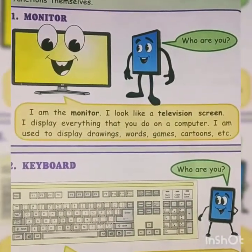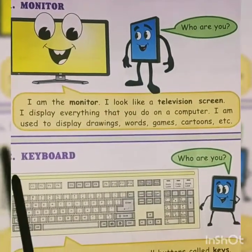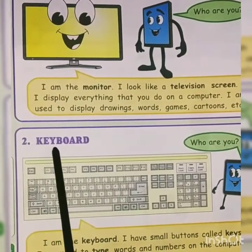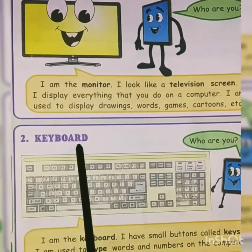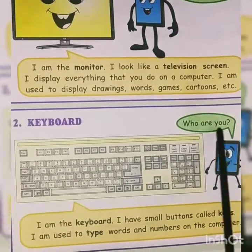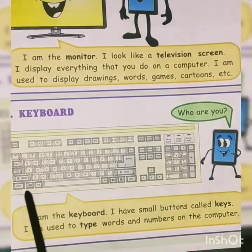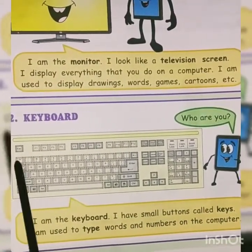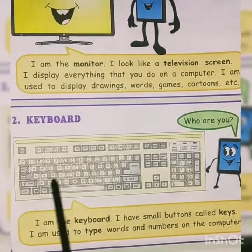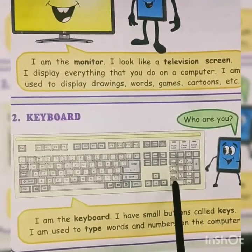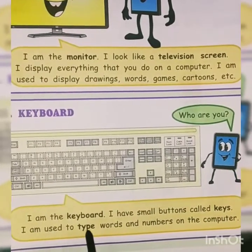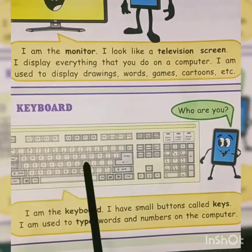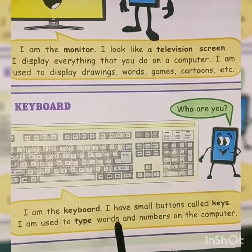Moving forward, the second part is the keyboard. The spelling of keyboard is K-E-Y-B-O-A-R-D. The keyboard introduces itself: I am a keyboard. I have small buttons called keys. You can see these small buttons in the keyboard — these are called keys. I am used to type words and numbers on the computer.